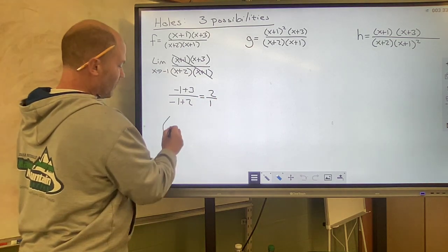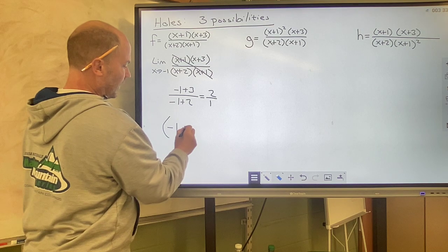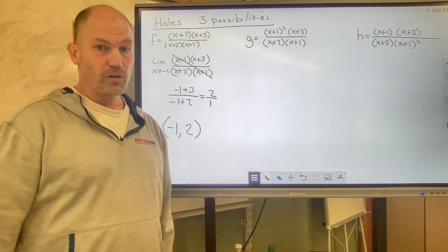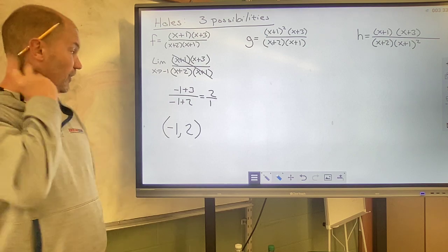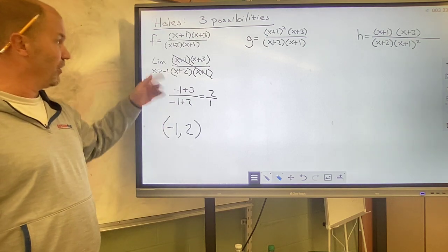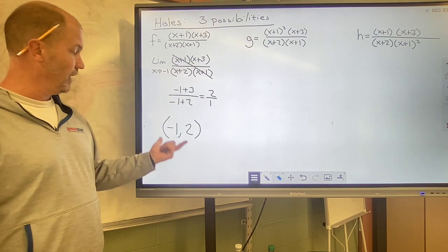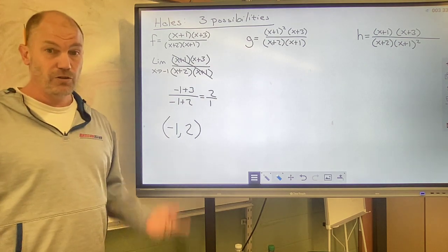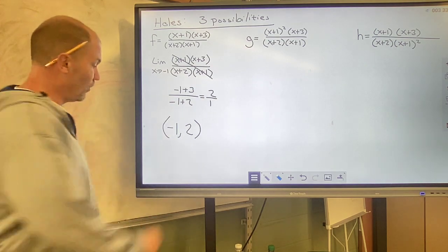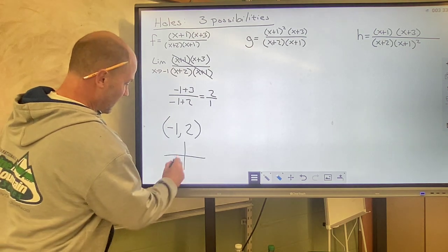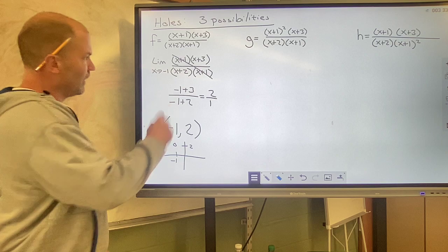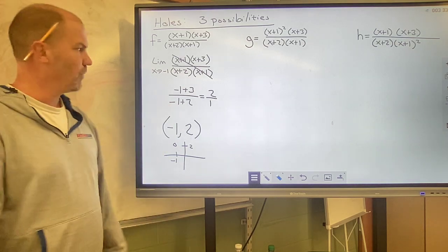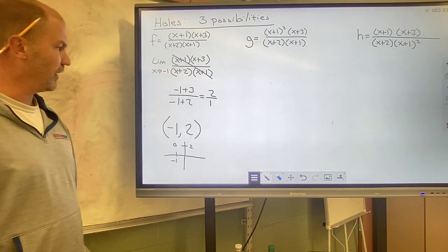So we now know that the hole is at negative 1, 2. So that's the first and most common way that this works out, is that you cancel out, you plug in, and you get an answer of negative 1, 2, and that is the location of the hole. And just so we can see it, negative 1, 2, we would draw this hole, and this graph would go through there somewhere. I'm not going to do the details all the way out.